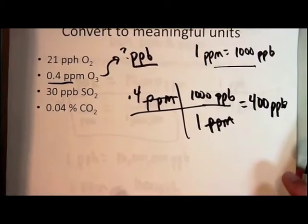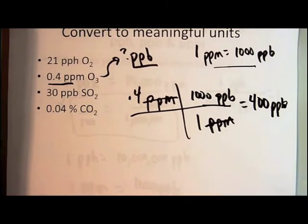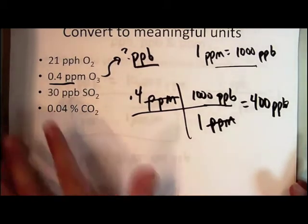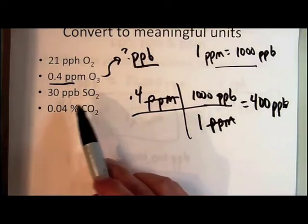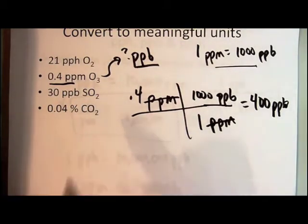Alright, let's see here. Okay, what about the 30 parts per billion? That's a nice representation of the sulfur dioxide concentration. What about this 0.04 percent carbon dioxide? Can we do better there?